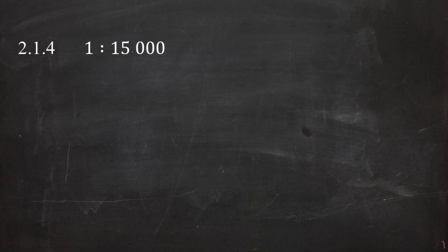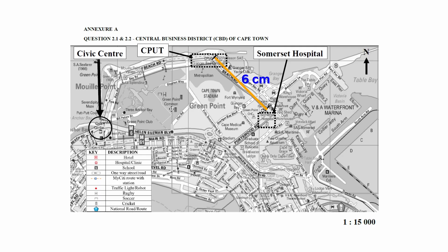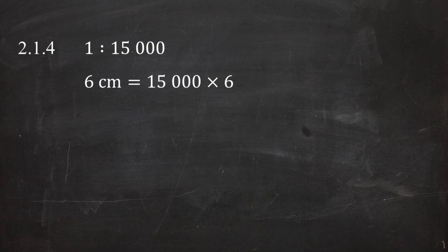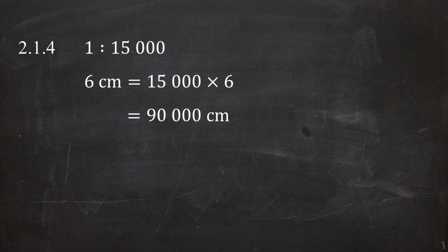This means that for every one centimeter measured on the map there are 15,000 centimeters in reality. Since the measured length between CPUT and Somerset Hospital is six centimeters, the actual distance will be calculated as 15,000 multiplied by six centimeters, which equals 90,000 centimeters in reality. Since the question requires the answer in kilometers, we need to convert 90,000 centimeters to kilometers.